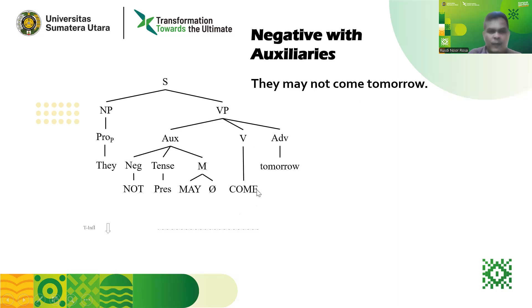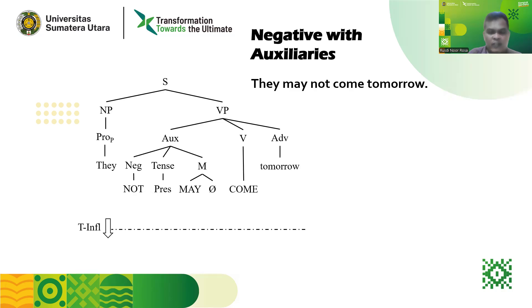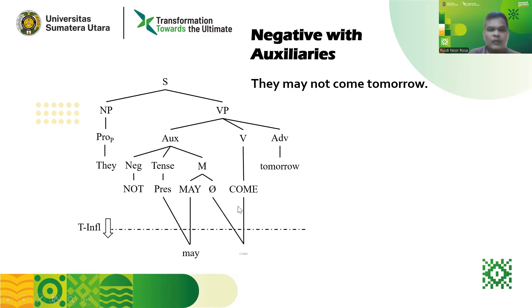We apply here inflectional transformation. Why? When we are talking about tense and about auxiliary, we are talking about inflection. So the name of this transformation is inflectional transformation. The inflectional transformation here involves 'may,' which is in the form of present. And then we have 'come' that comes after modal, indicated by zero cross — it means that 'come' must be in its infinitive form. The question is: have we finished the analysis? The answer is no.